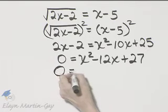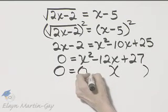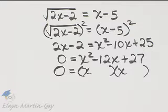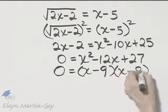We will try and solve by factoring, so let's see if this trinomial factors, that will be x times x. Two factors of 27 whose sum is negative 12, that is negative 9 and negative 3.